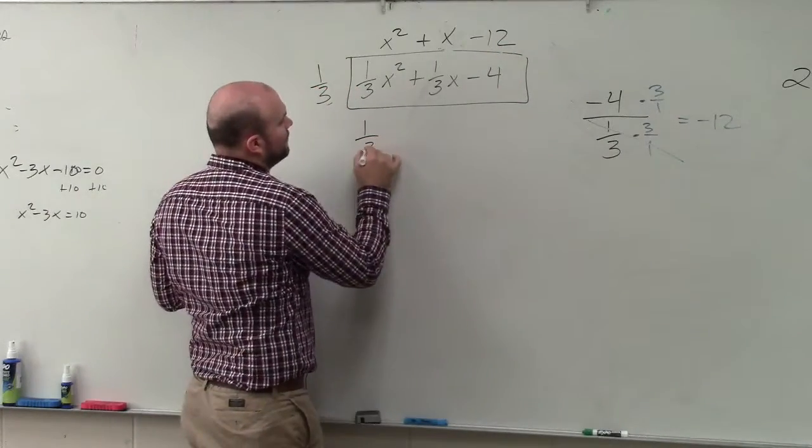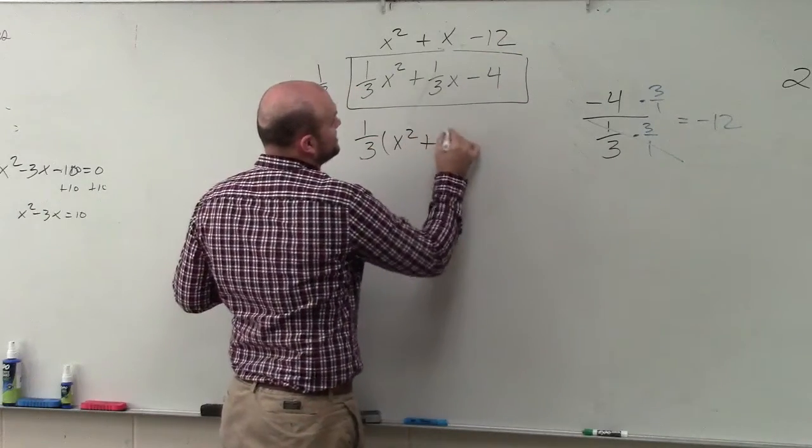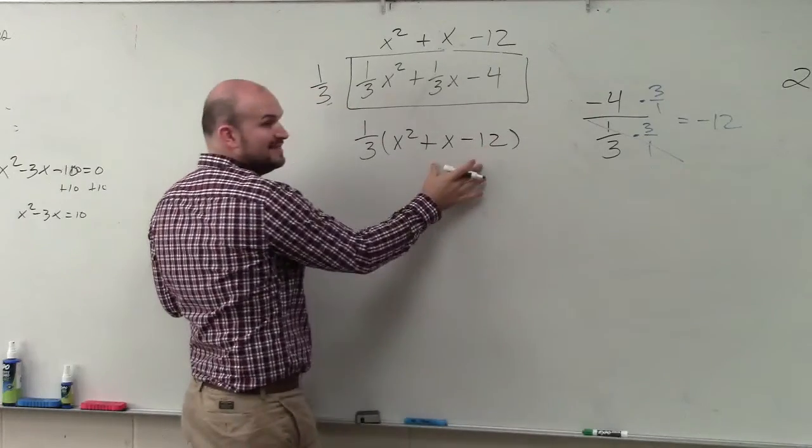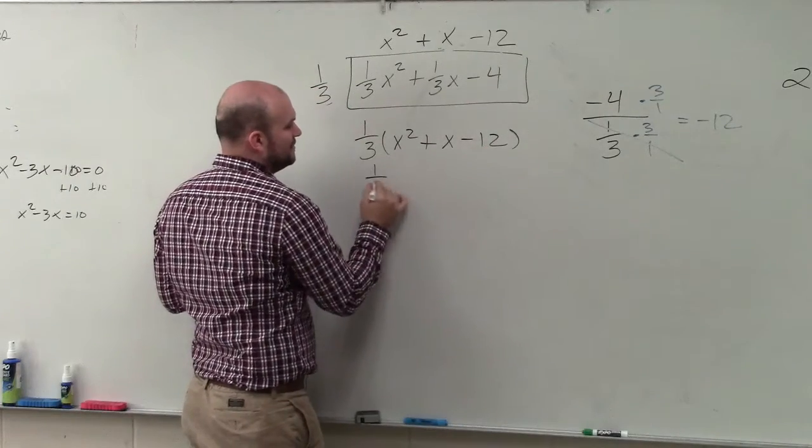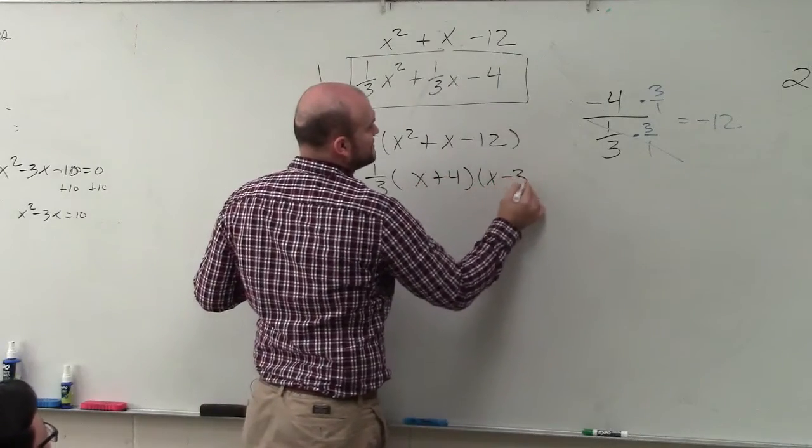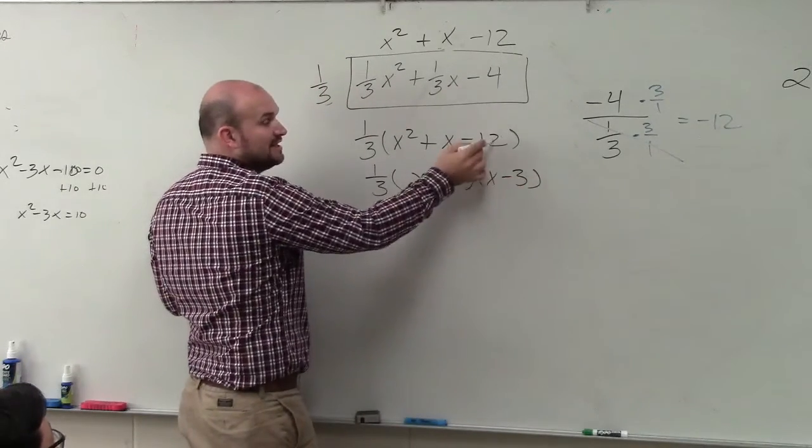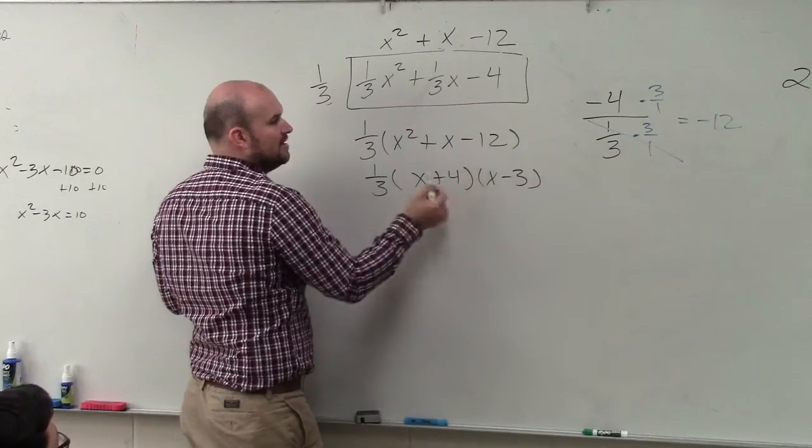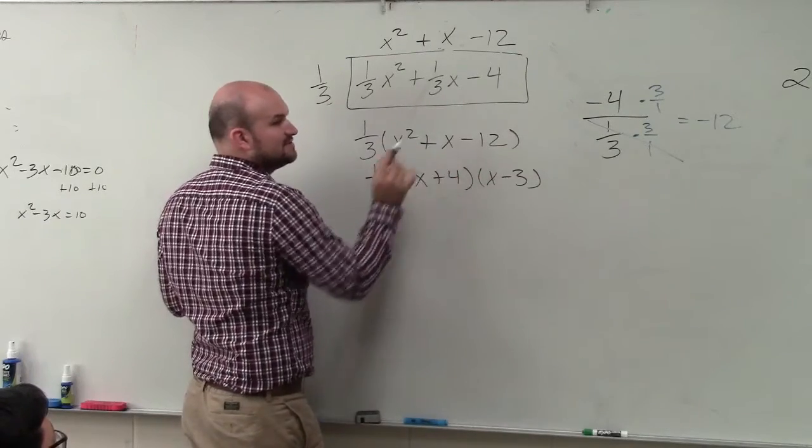So therefore, we have 1/3 times x squared plus x minus 12. And then this is now much easier to factor out, which is going to be x plus 4 times x minus 3. Because 4 times negative 3 gives you negative 12, and 4x plus negative 3x gives you x.